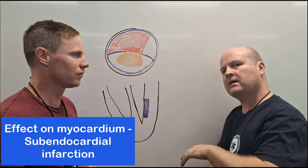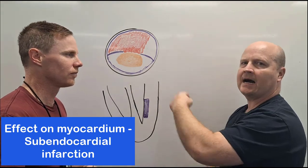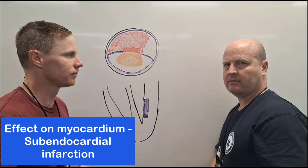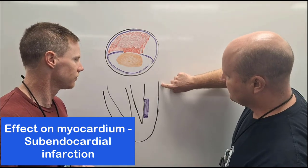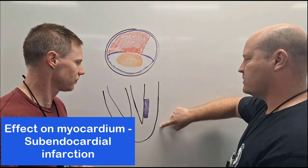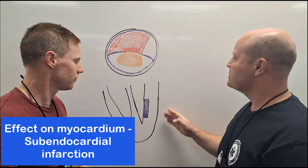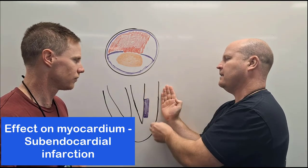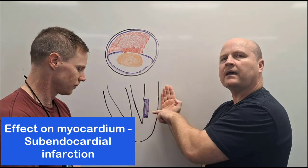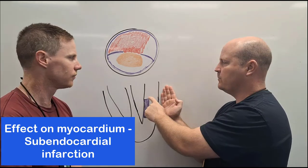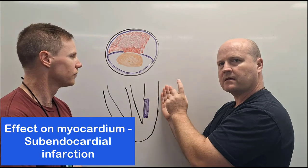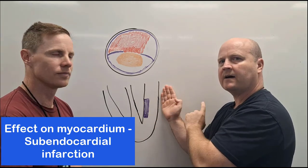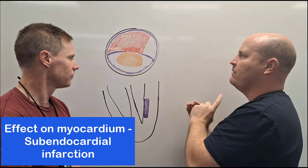Sub because it's deep or below, endo within, cardial heart, infarction death. You can imagine the blood vessel is going to be on the outside of the heart tissue. So if only a small amount of blood is getting through then the outside is going to get that, but then the deeper layer is going to suffer and that's going to be the first to die. So that's our subendocardial infarct.